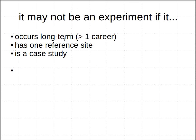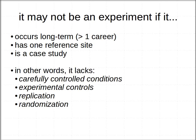It's almost like saying theory with a capital T versus a lowercase t. The word 'experiment' gets used fairly loosely, and I would prefer we were more strict about what constitutes an actual experiment. What makes it not an experiment? I would say if something occurs long-term over the course of more than one career, if it only has one reference site, if it's a case study — we see that a lot in medicine, where you follow one patient through their treatment and report on their results — those kinds of things might not be considered actual experiments. If it's lacking carefully controlled conditions, you don't have multiple replicated controls, and it hasn't been a randomized study design, then you haven't actually conducted a good experiment.